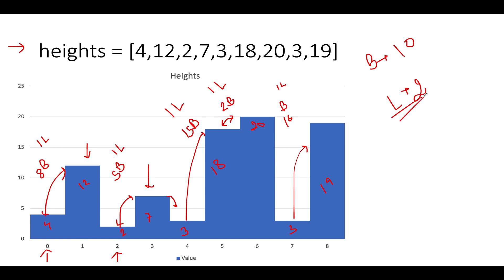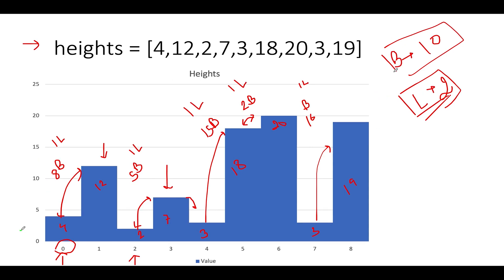We have at most 2 ladders and 10 bricks total. The intent of the problem is to use ladders at those places where the gaps are huge, and use bricks where the gaps are smaller, because both quantities are limited. Using a ladder has no restriction on how large a gap it can cover, so we use ladders for the largest gaps and bricks for the smaller ones.